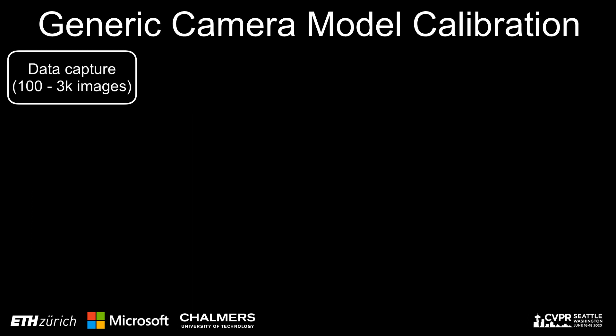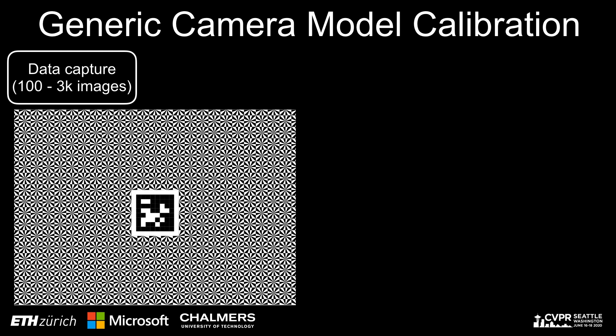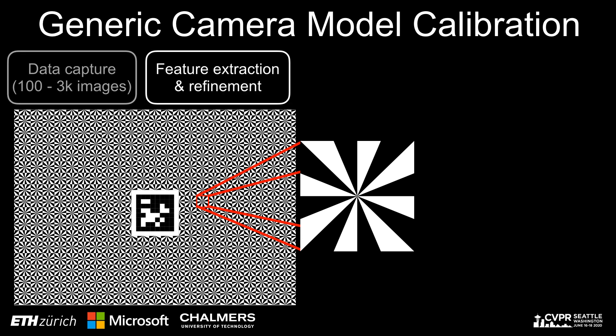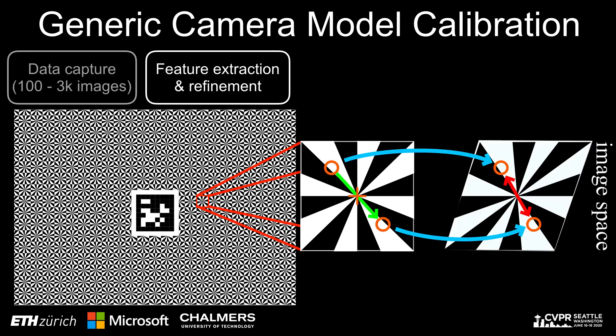In this paper, we propose a calibration procedure designed for highly accurate camera calibration. We use a custom calibration pattern for data capture. Compared to a standard checkerboard pattern, the Siemens star-like design leads to more accurate feature detections. We extract features at the center of the pattern elements, and to obtain highly accurate detections, we exploit mirror symmetries around the pattern for refinement.